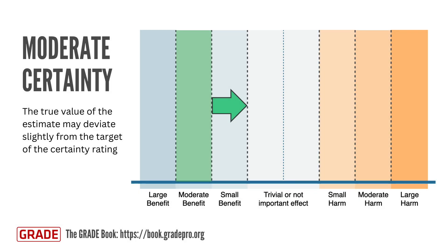Moderate certainty means that we are moderately confident that the true value of the estimate of interest is at one side of a threshold of interest or within a specific range. However, the true value of the estimate may deviate slightly from the target of the certainty rating. For example, if the evidence suggests a moderate benefit, moderate certainty means the true effect could be slightly smaller or larger, such as a small benefit instead of a moderate benefit.